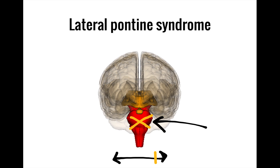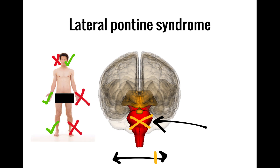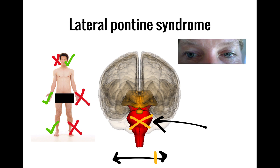Moving on from the medulla to the pons, lateral pontine syndrome is in many ways quite similar to lateral medullary syndrome. This is because the medial-lateral axis of the lesion is the same, so many of the same findings — including loss of protopathic sensation contralaterally in the extremities and ipsilaterally in the face, ipsilateral Horner syndrome, and ipsilateral cerebellar deficits — will still be present.